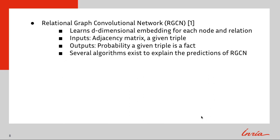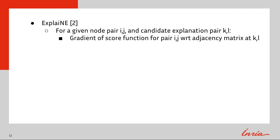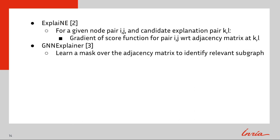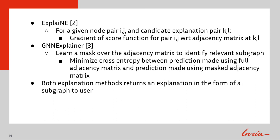Recently, several algorithms have proposed to explain the predictions of black box graph neural networks. There is ExplaiNE, where for a given node pair ij and a candidate explanation pair kl, ExplaiNE computes the gradient of the scoring function for pair ij with respect to the input adjacency matrix at kl. Additionally, there is GNN Explainer, designed specifically to explain the predictions of graph neural networks. GNN Explainer learns a mask over the input adjacency matrix to identify a relevant subgraph by minimizing the cross entropy between a prediction made using the unmasked adjacency matrix and a prediction made using the masked adjacency matrix. Both of these algorithms can return explanations in the form of a subgraph to the user and can both be applied to RGCN post hoc.